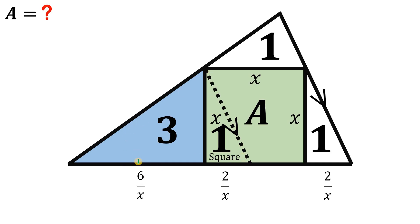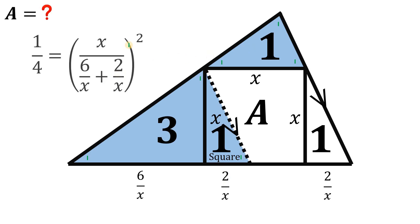Let's focus on the triangle having an area of four square units. Notice this triangle on the top is similar to the triangle having an area of four square units. Since these two triangles are similar, the ratio of their areas equals the ratio of their corresponding sides raised to the power of 2. So we have 1 to 4 equals x over (6 over x plus 2 over x), all raised to the power of 2.